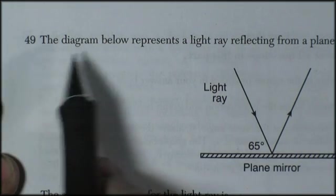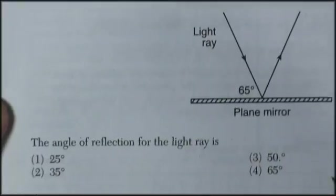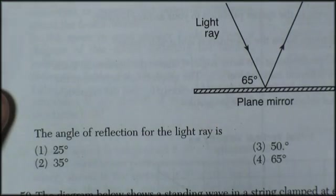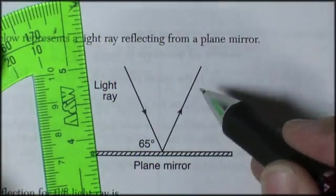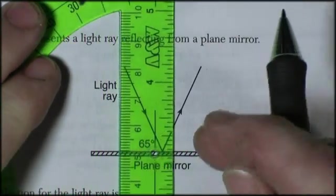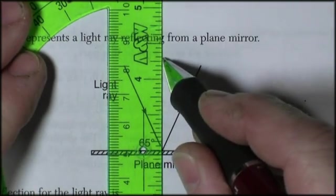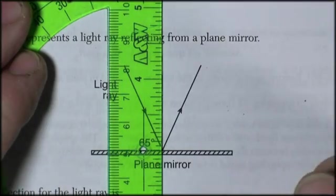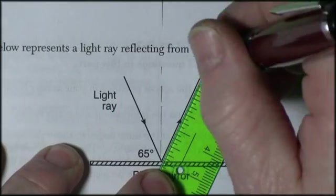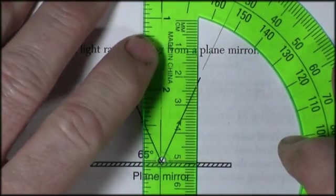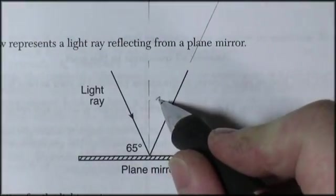We're on to page 11, question 49. The diagram below represents a light wave reflecting from a plane mirror. So here we are, and we want to know the angle of reflection for the light ray. Don't take anything for granted on these problems. Here's the incident ray, here's the reflected ray. To measure the angle, you always measure from a normal. So at the point where it hits the mirror, you draw a perpendicular. And then you measure the angle of reflection, and it would be this angle right here. And always extend your rays, and I'm looking at 25 degrees.